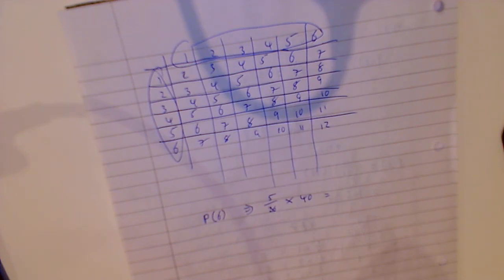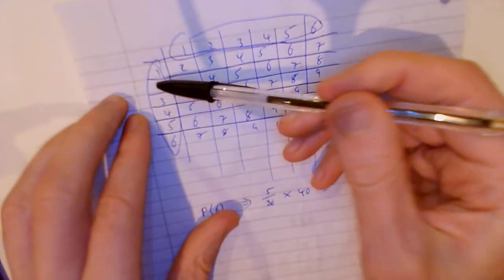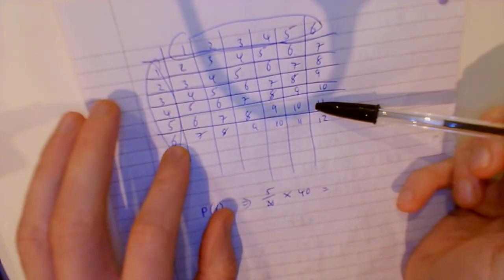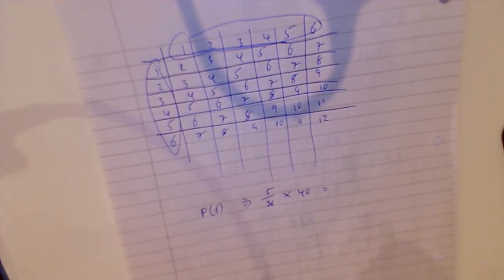Really simple. Now the condition said I need doubles. Here's the doubles: two and two, three and three, four and four, five and five, six and six, and one and one. So there's six doubles you can get. That'd be six out of thirty-six.